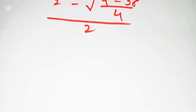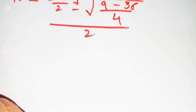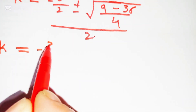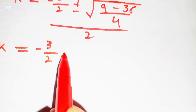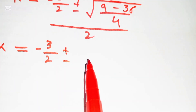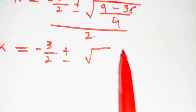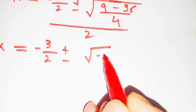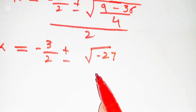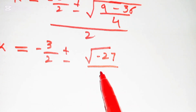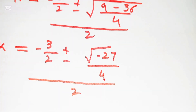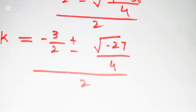So k = (−3/2 ± √(−27/4)) / 2. Since the discriminant is negative (−27), we have complex roots.